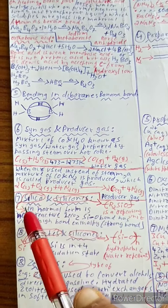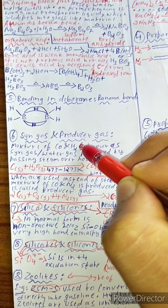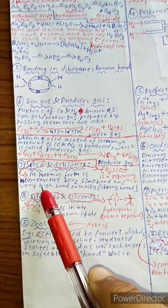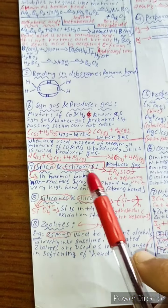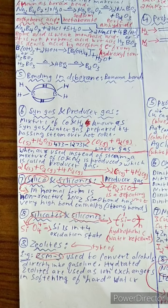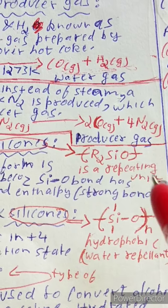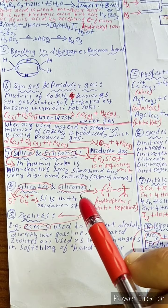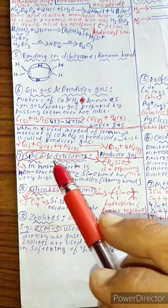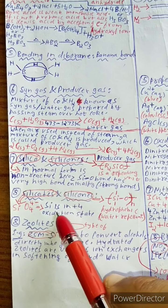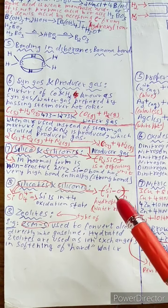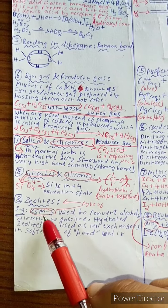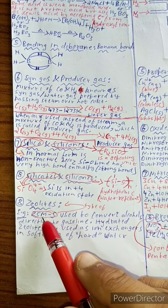Silica in normal form is non-reactive because the Si–O bond has a very high bond energy. Silicones have a repeating unit of R₂SiO. Silicates: the SiO₄⁴⁻ unit where silicon is in +4 oxidation state. Silicones with repeating unit R₂SiO are hydrophobic and water repellent.